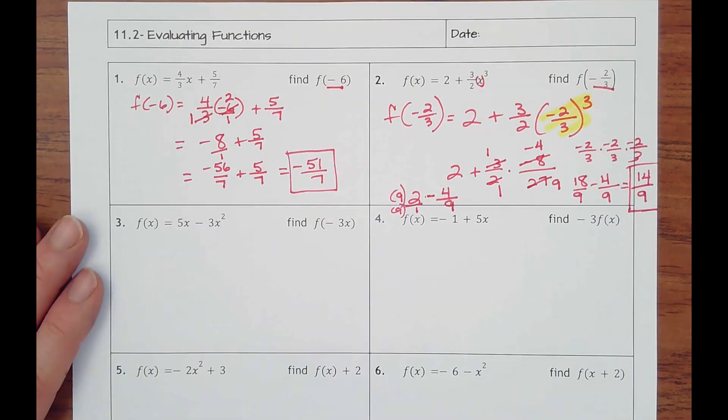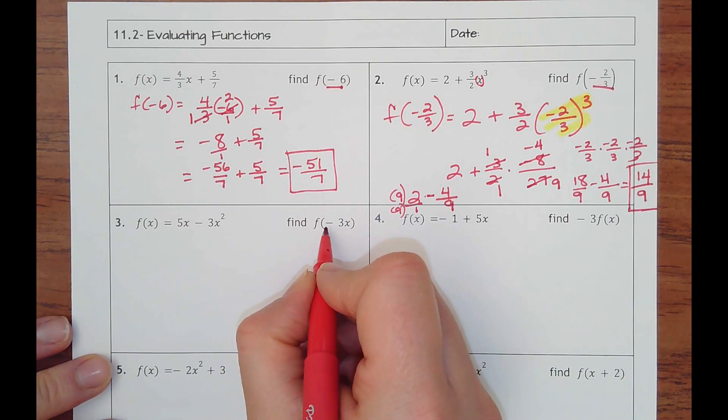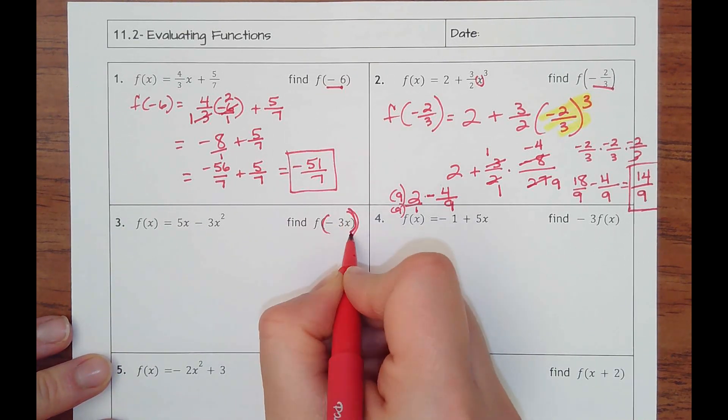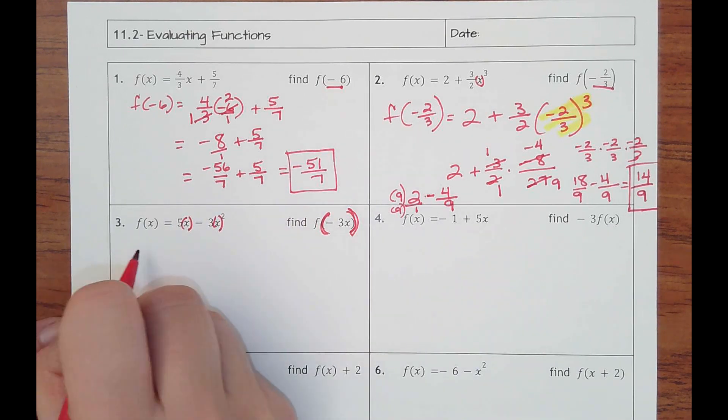So again, calculator if you didn't understand that. Number three, now I'm just plugging in an expression with x. So this negative three x is going to go in every time I see an x, and then all I can do is simplify.